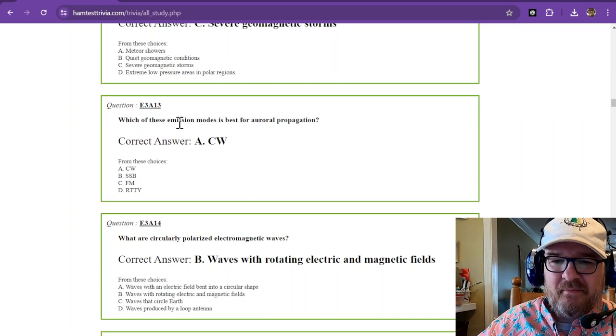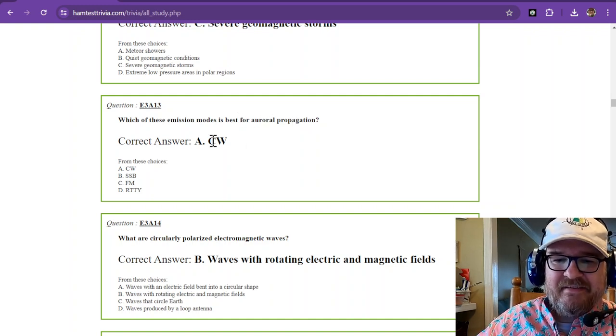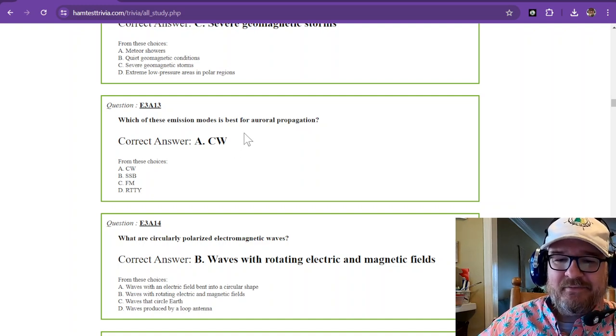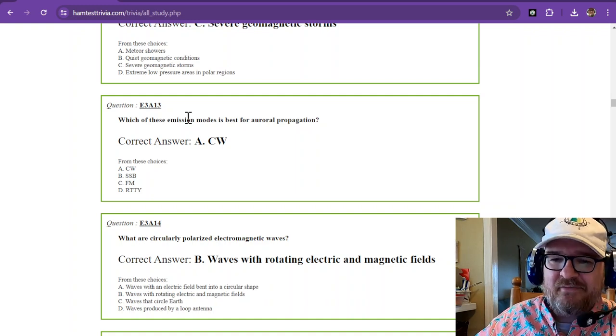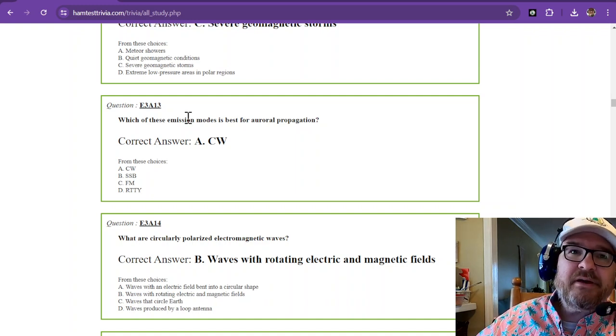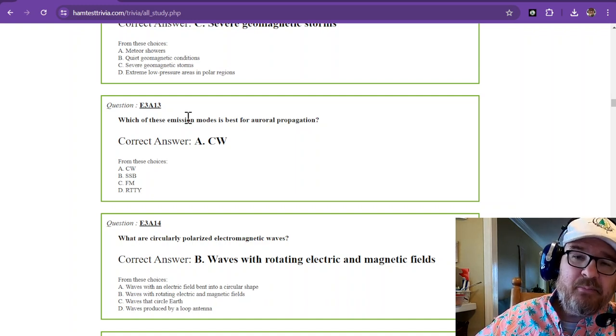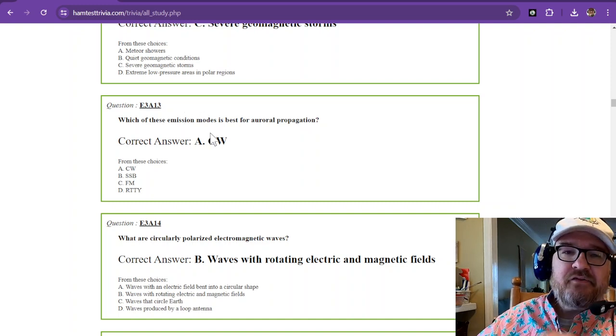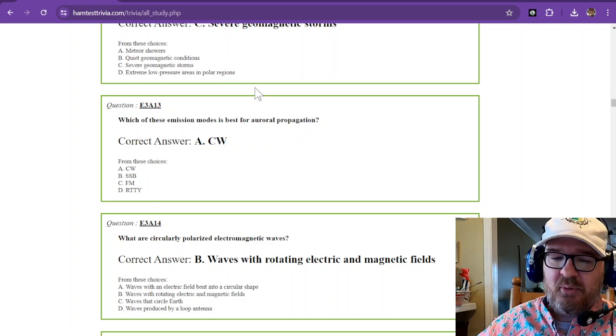So which of these emission modes is best for auroral propagation? And that is CW. And there is a movie called Frequency with Dennis Quaid, and they kind of played off of that. They didn't use Morse code because it was a movie and how many people would watch it if it was in Morse code. But he did do some magic through auroral propagation.